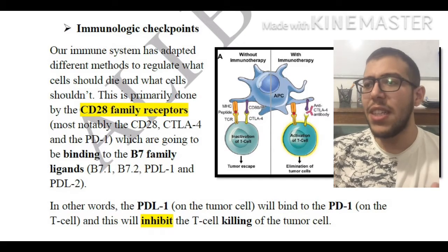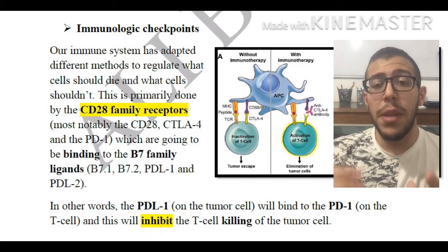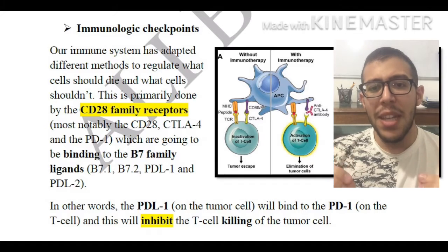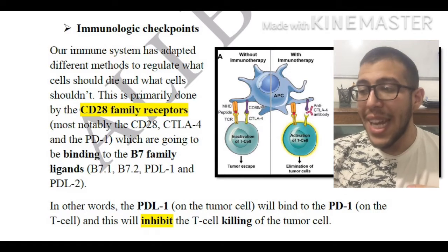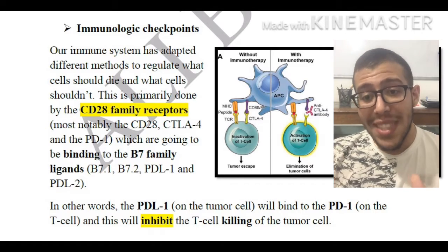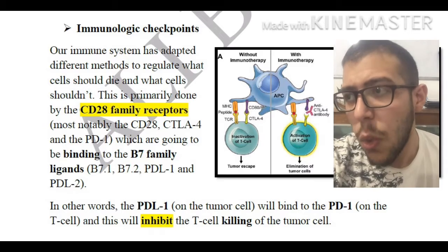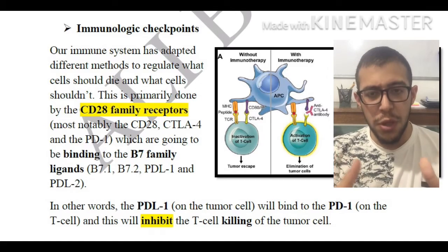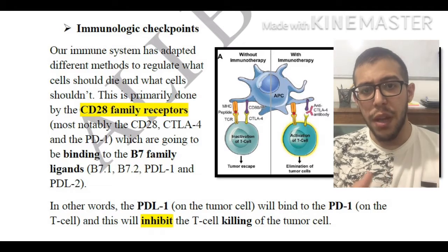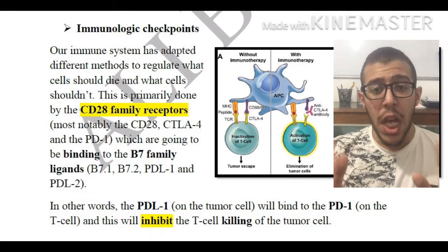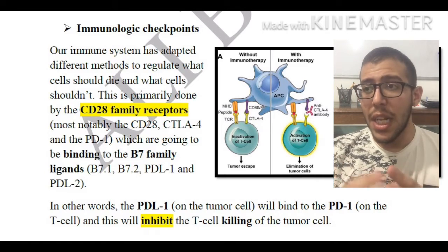Basically, these CD28 family receptors' main job is to prevent the killing of tumor cells. For the most part this is a good thing in our body, but when it comes to tumor cells, this is definitely not a good outcome.